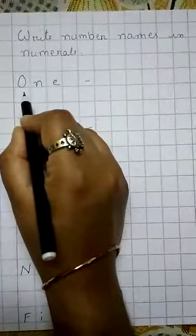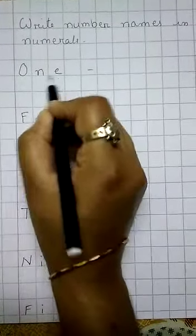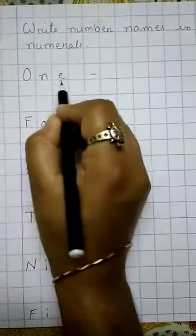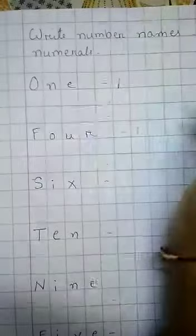First we will write O-N-E. This is kis ka spelling hai? O-N-E. We will write one, number me likhna hai. One.